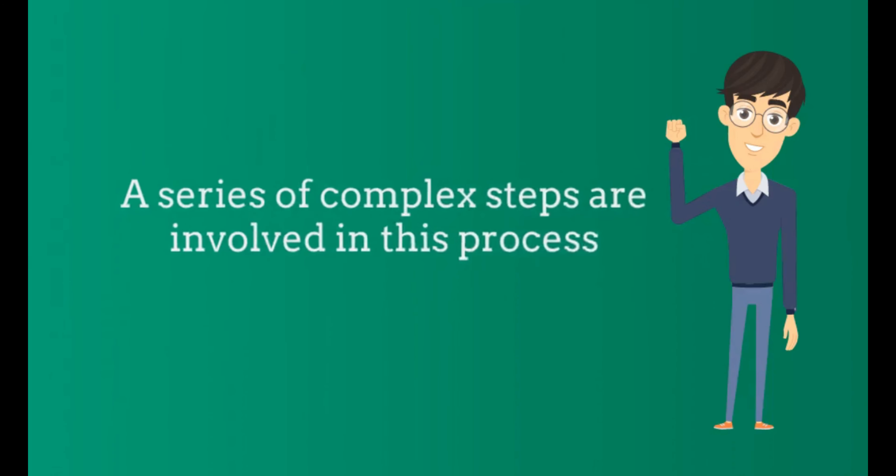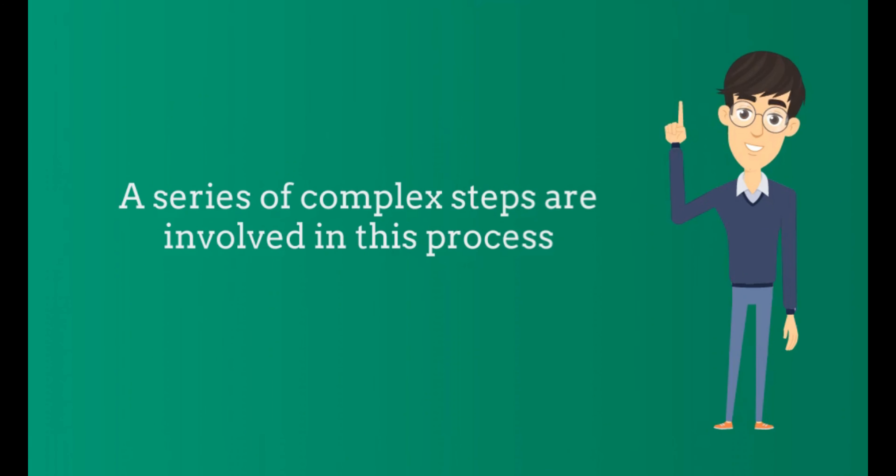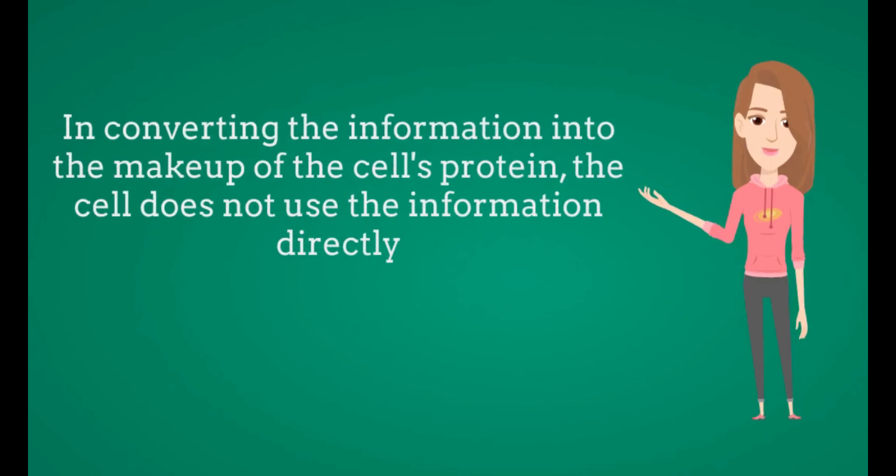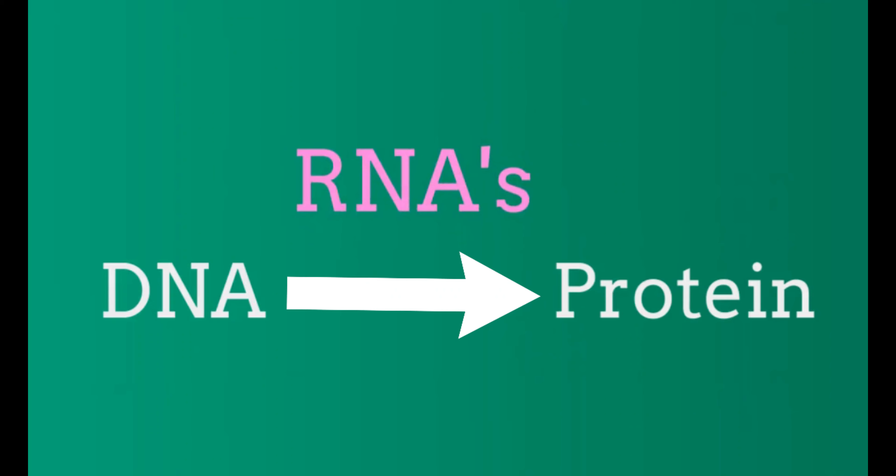A series of common steps are involved in this process. In converting the information in DNA into the makeup of cell proteins, the cell doesn't use the information directly. Instead, an intermediate called RNA is used between DNA and protein,